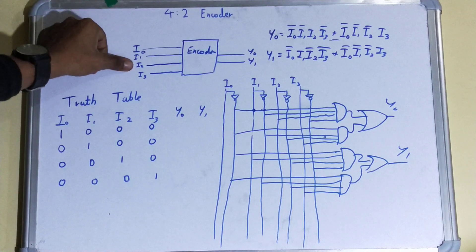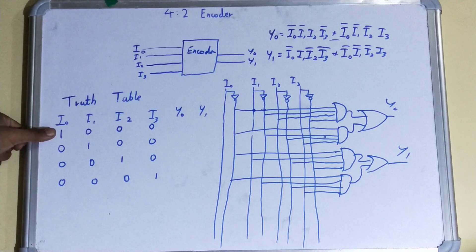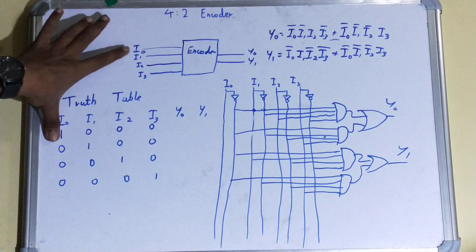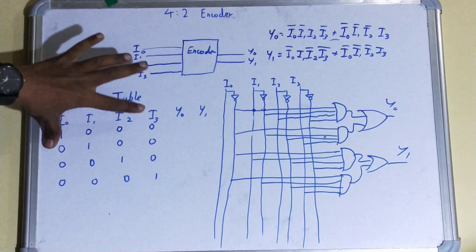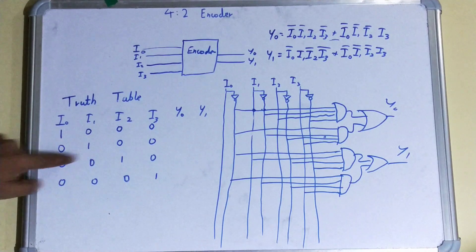Either this will be high, or this, or this - so a total of four things can happen. In the same way, if you see, first I0 is high. If this is high, others will be low. If this is high, others are low. If this is high, others are low, and the same thing with the last one.